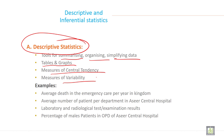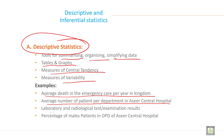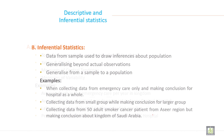Some examples to understand descriptive statistics: average death in the emergency care per year in the kingdom; average number of patients per department in Asir Central Hospital; laboratory and radiological examination results; and percentage of male patients in OPD of Asir Central Hospital.